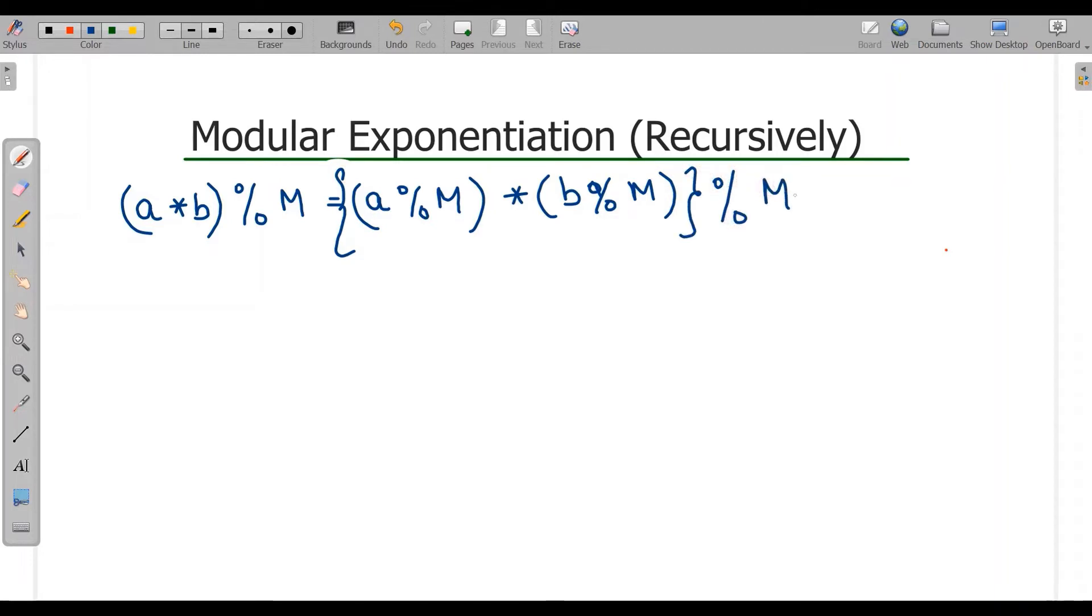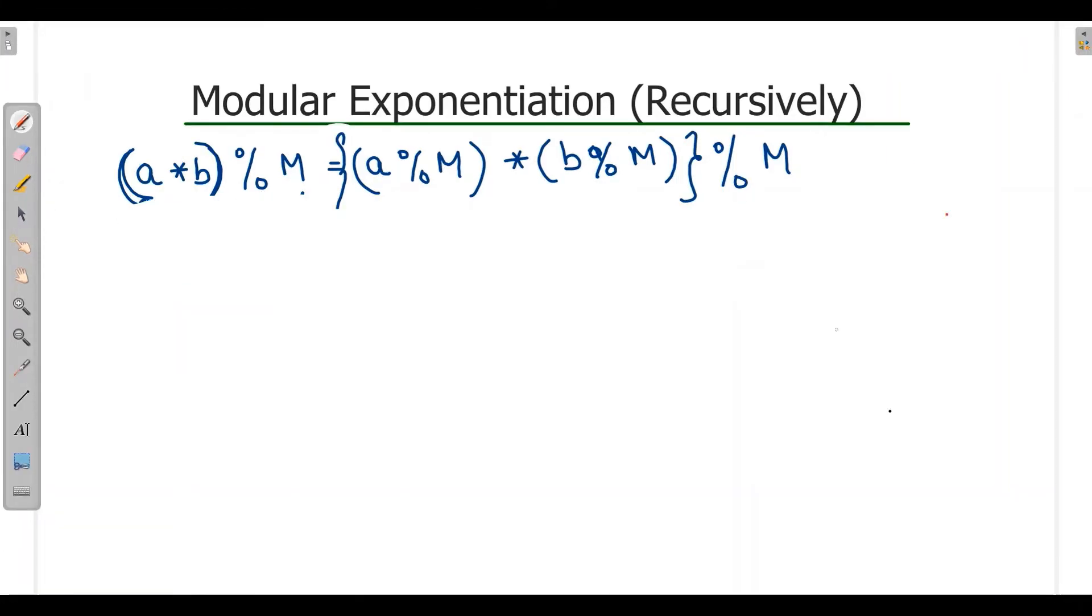Then b modulus M, and then completely modulus M. So for this, this will come first with a, then with b, and then collectively after a into b modulus M. So let's understand this with an example.